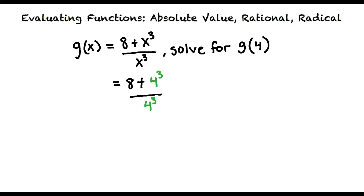Yes, that is correct. This expression can be written as 8 plus 64 all over 64 because 4 times 4 times 4 equals 64. Then we add the numerators together which results in 72 over 64, and this expression can be simplified to 9 over 8.